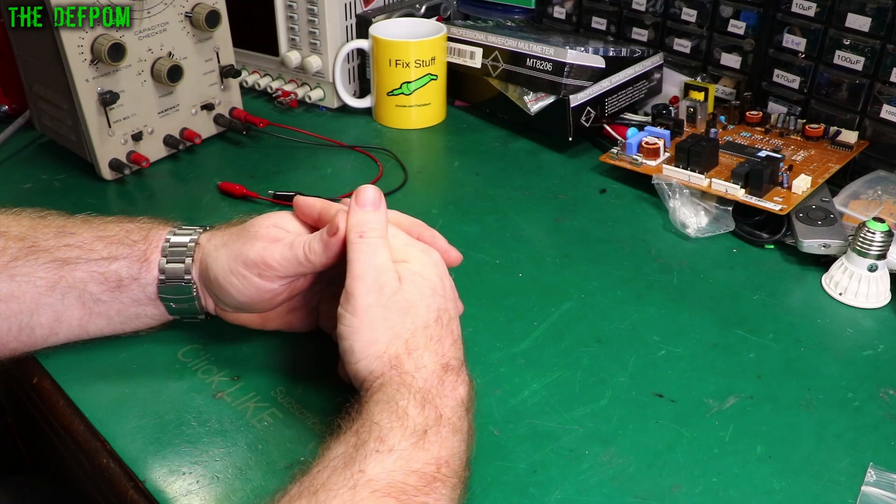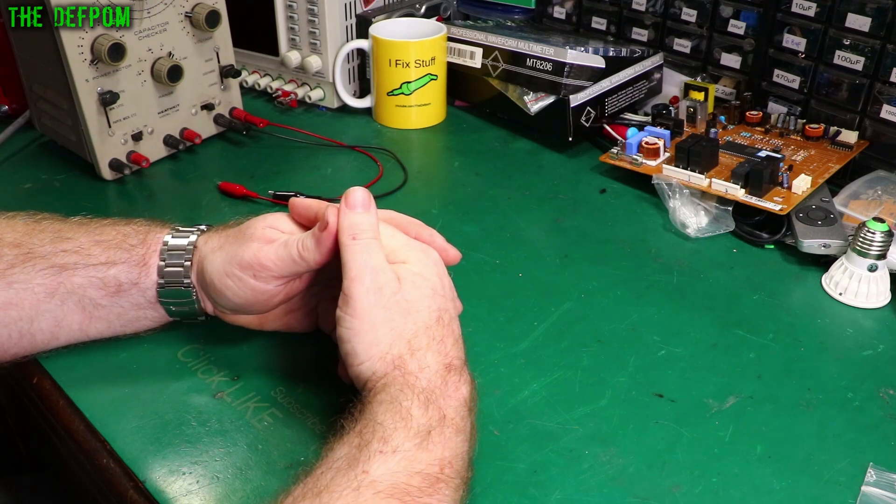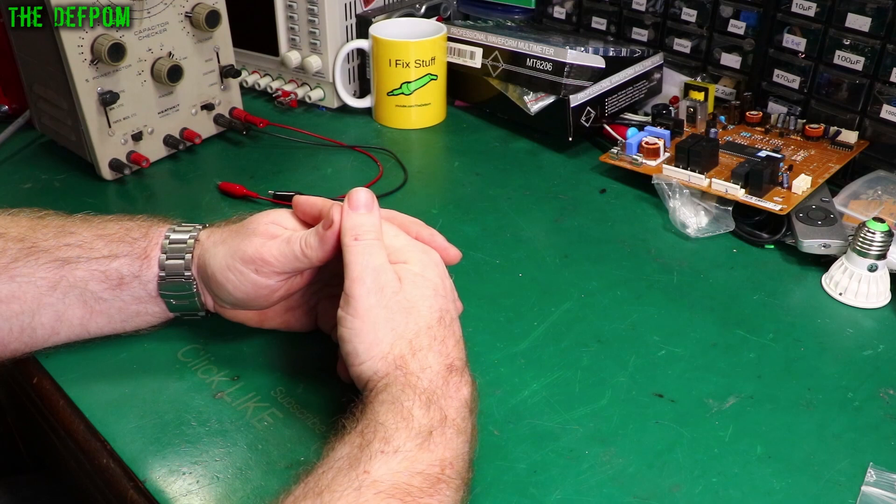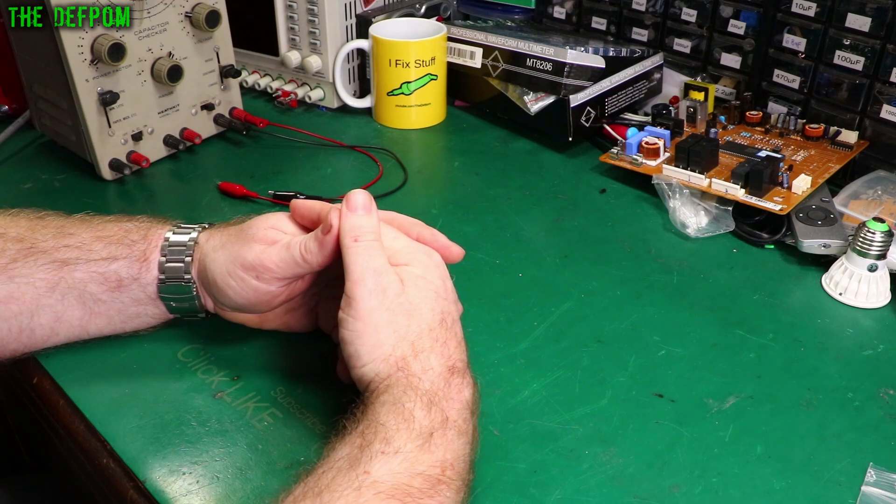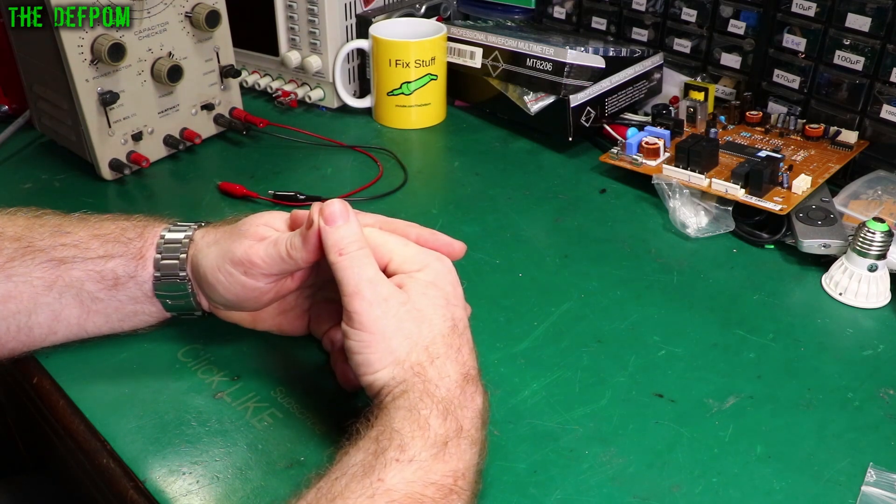Solder equipment. I'll cover soldering irons and hot air stations and various tools like that. Anything to do with desoldering. What you can get away with using, what kinds of equipment you may need for doing desoldering work and that sort of stuff.